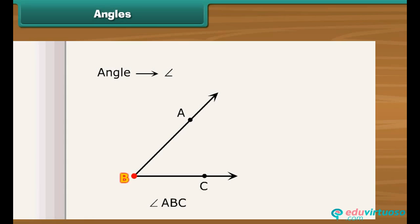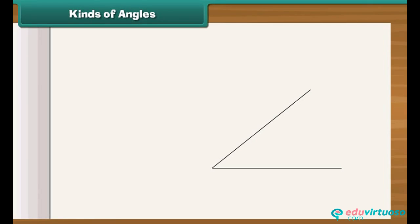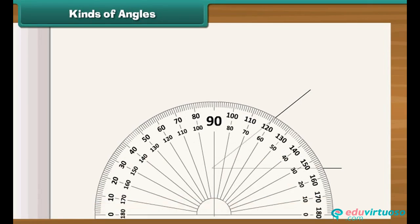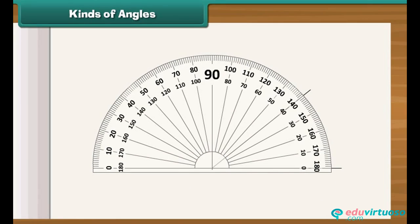Here, B is a vertex. A is a point on one ray while C is a point on another ray. An angle can be measured by using a protractor. It is also used in drawing an angle of a given measure.